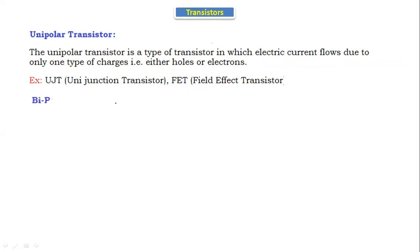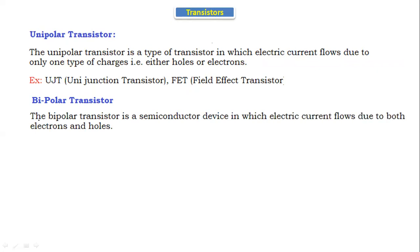The bipolar transistor is a semiconductor device in which the electric current flows due to both electrons as well as holes. That's why it is called a bipolar junction transistor. The example of the bipolar transistor is BJT (bipolar junction transistor). In the unipolar transistor, electric current flows due to either holes or electrons — only one charge carrier. In the bipolar transistor, the current flows due to both electrons as well as holes — both charge carriers — that's why it is called bipolar.